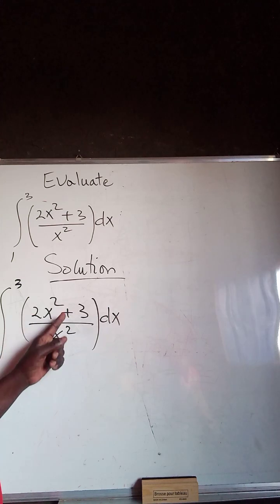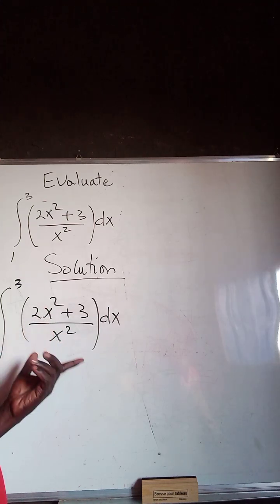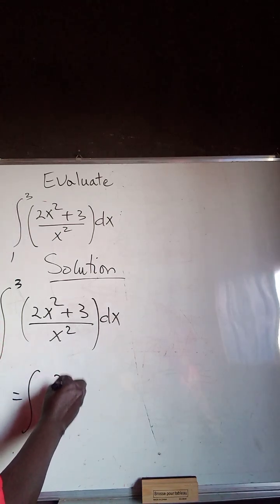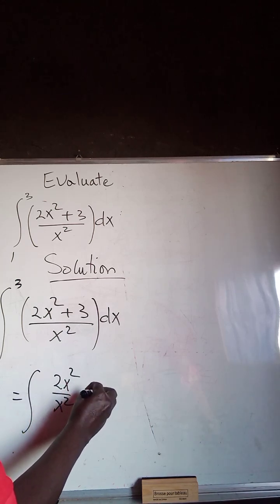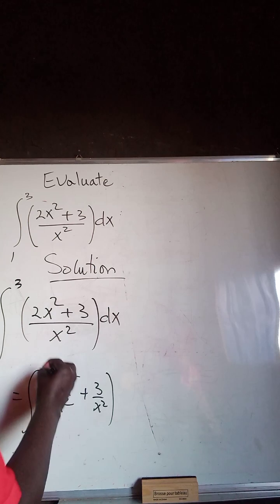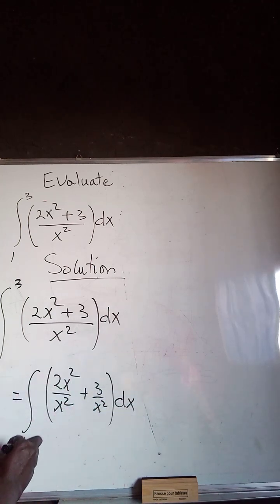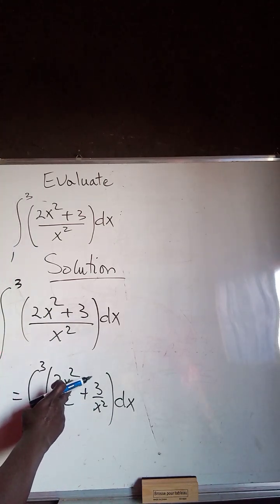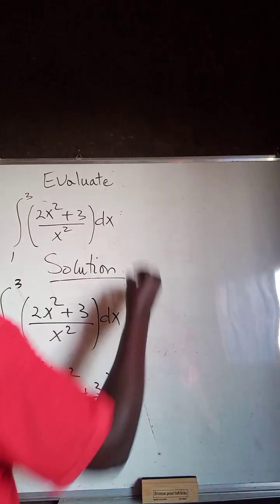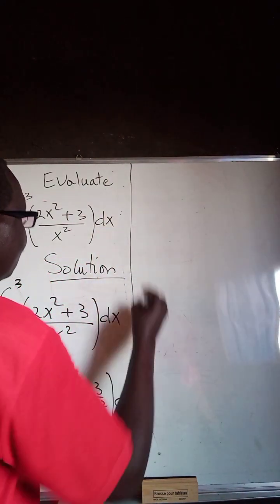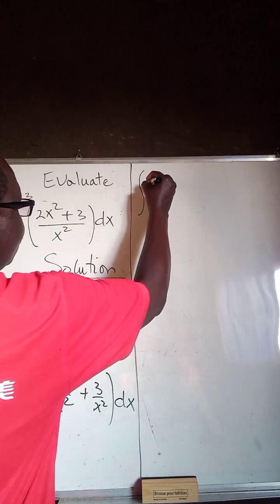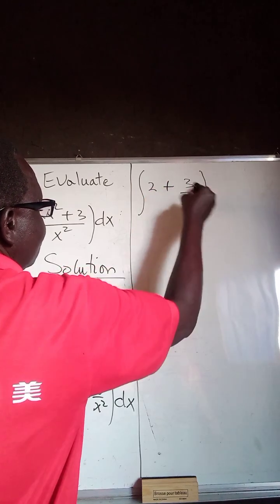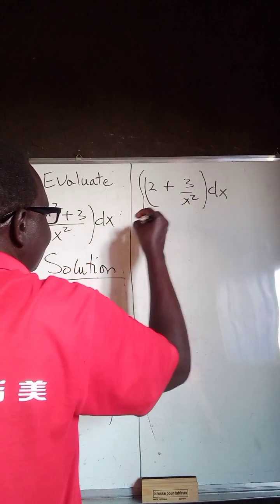Here, the power of the numerator is 2, and the highest power of the denominator is also 2, so it can be divided. This gives the definite integral of 2x squared divided by x squared, plus 3 divided by x squared, all with respect to x, evaluated from 1 to 3. The x squared terms cancel, leaving the definite integral of 2 plus 3 divided by x squared, with respect to x, evaluated from 1 to 3.